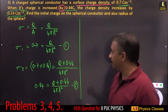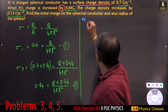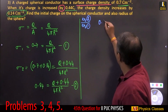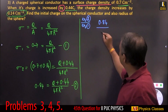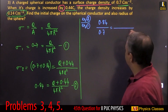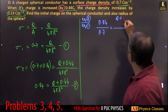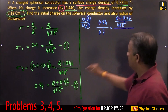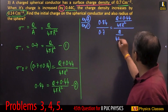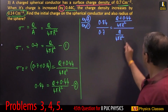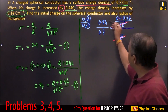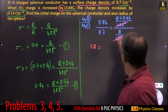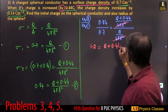Taking equation 2 divided by equation 1: 0.84 divided by 0.7 equals Q plus 0.44 divided by 4 pi r squared, over Q divided by 4 pi r squared. This simplifies to 1.2 equals Q plus 0.44 divided by Q.